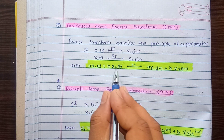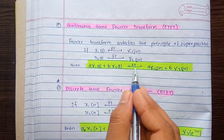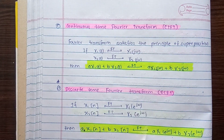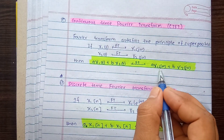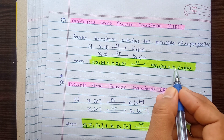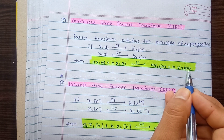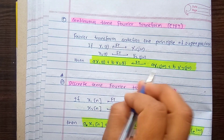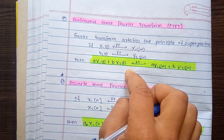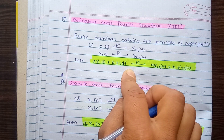Applying the linearity of CTFT: if the input is A·X1t + B·X2t, then its Fourier Transform is A·X1(jω) + B·X2(jω). This condition is the same as the principle of superposition, confirming linearity.